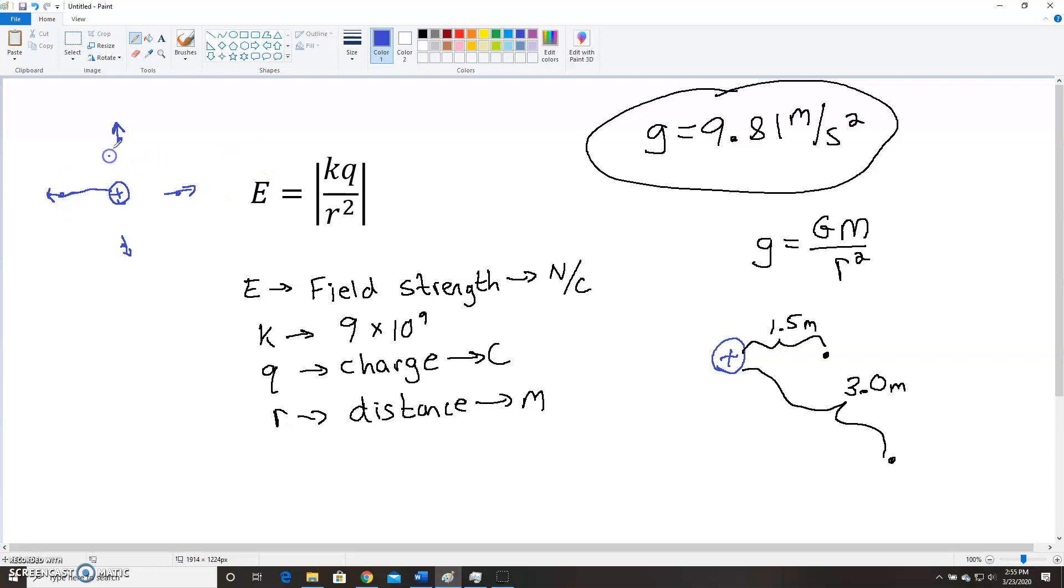So we'll talk about more direction a little bit more later. But in general, you can say that positive charges will have field lines pointing away from them. Or as negative charges, it's going to be the opposite. Negative charges are going to have field lines pointing towards them because a positive test charge, if it was placed near this negative, would want to move towards it.